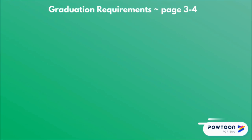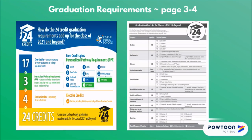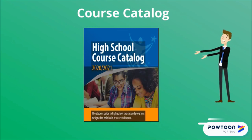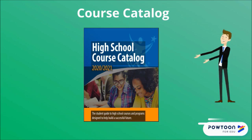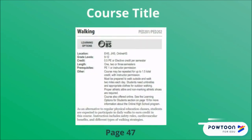Let's begin the registration process. Your graduation requirements can be found on the following pages in your course catalog. The course catalog provides the essential info about every Jackson High School class and program. Here's how to read a class description.